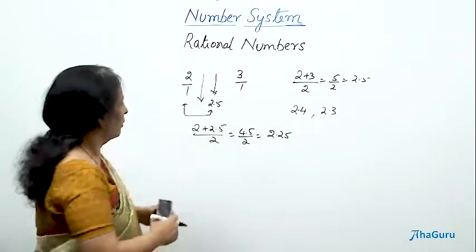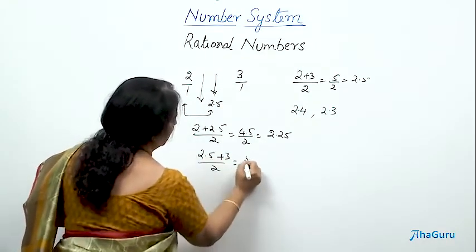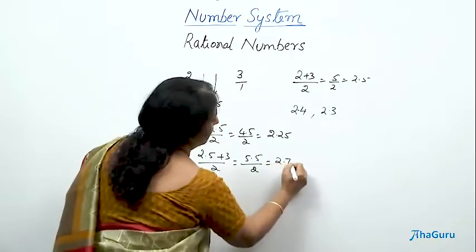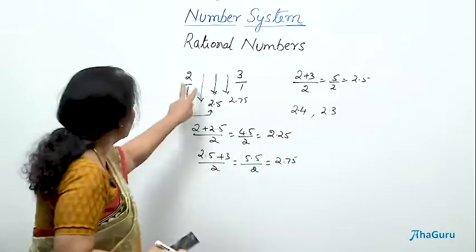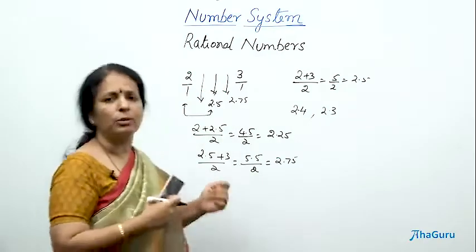Similarly, here also I can find, so if I find between say 2.5 and 3 and divide by 2, this is 5.5 by 2 and that will give me 2.75, which lies somewhere here, 2.75. And I can go on and again, these two numbers, I can find one. Between these two, I can find one. Between these two, I can find one. This is one method.